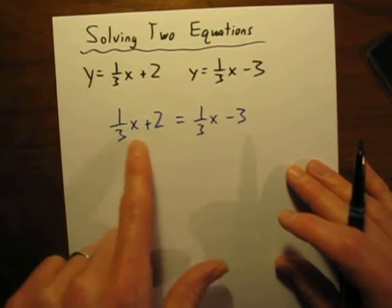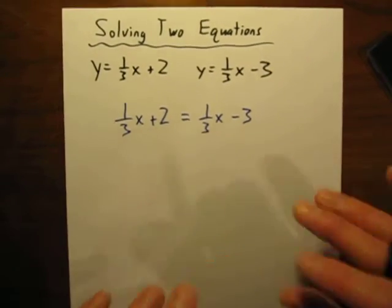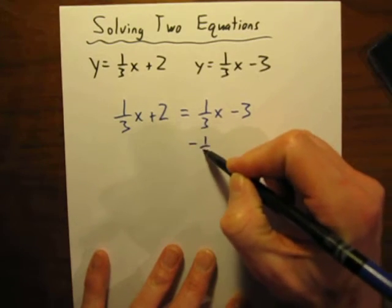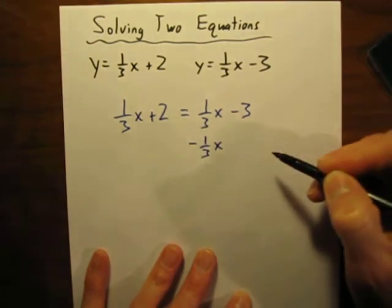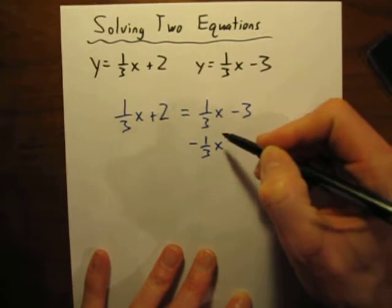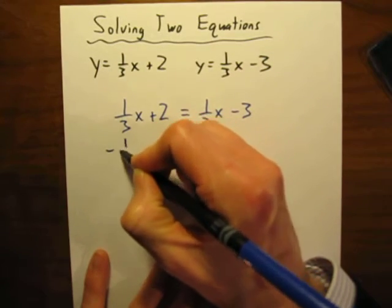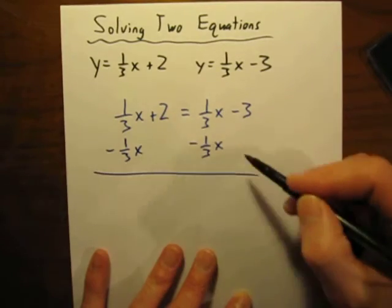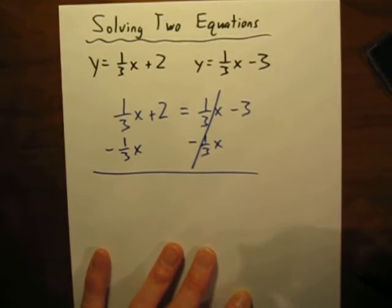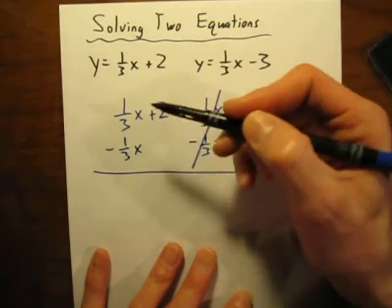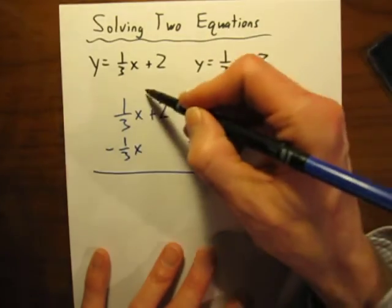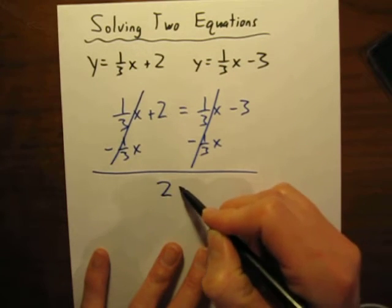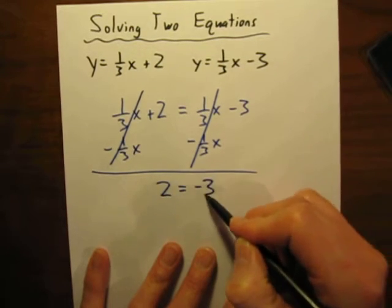And now, let's get the letters on one side, the numbers on the other side. So, let's get rid of this one over here. The opposite of a positive 1/3 is minus 1/3x. Whatever we do to this side of the equation, we have to do over here, minus 1/3x. On this side, they cancel out. But, oh my gosh, look over here, they cancel out over there as well. So, what's left?